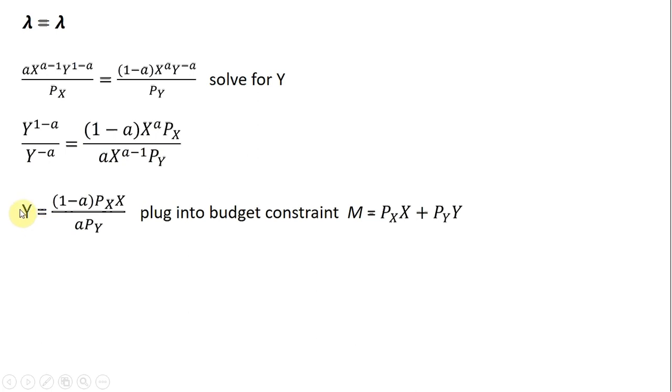And then the next step is just to plug this equation into the budget constraint. So where I see Y, I'm going to plug this result into it. So here's the result after the substitution.